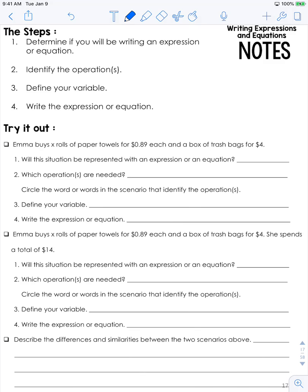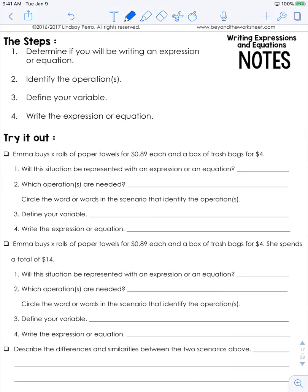So we're going to try this out right here. Your steps are going to be: determine if you're writing an expression or an equation, identify the operation, define your variable - so when we were talking about 'a number,' you're going to actually define what that is - and then you're going to actually write the expression or the equation.